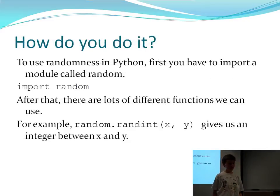But how do you do it? To use randomness in Python, first you have to import a module called random. Importing a module is like taking a bunch of functions and things that are already written and putting them in your program. After that, there are lots of different functions we can use. For example, random.randint gives us an integer or a whole number between x and y.